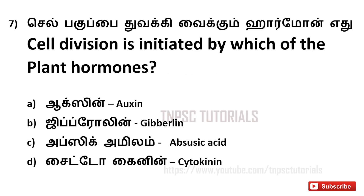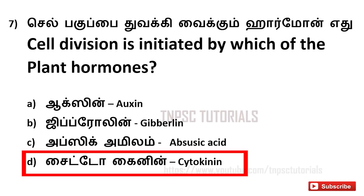Seventh one: Cell division is initiated by which of the plant hormones? A. auxin, B. gibberellin, C. abscisic acid, D. cytokinin. And the answer is D. cytokinin.